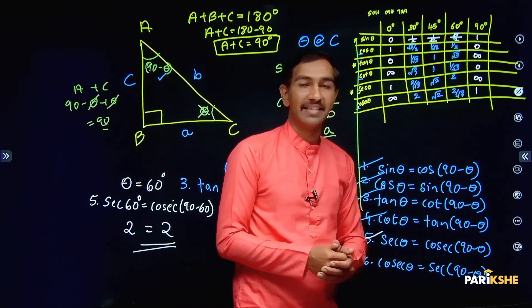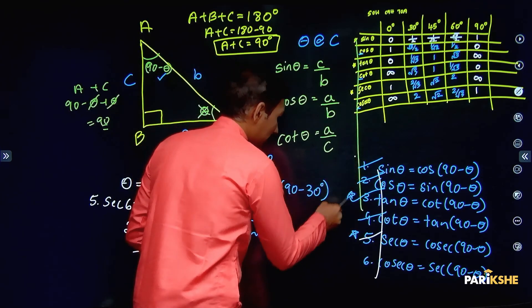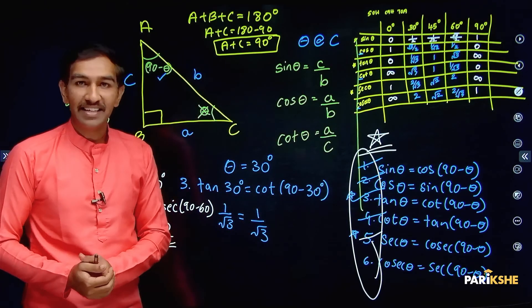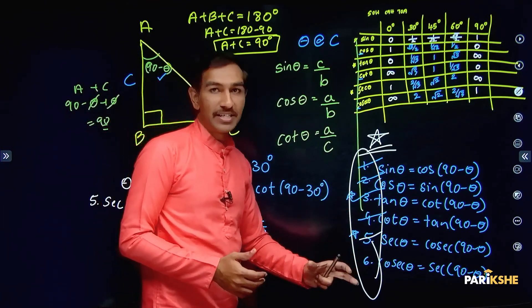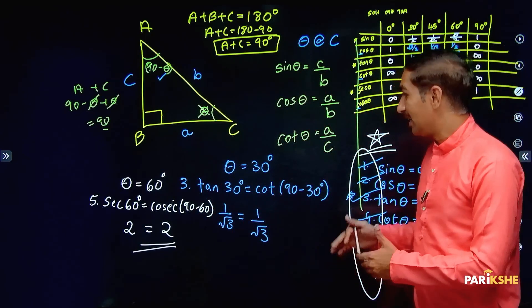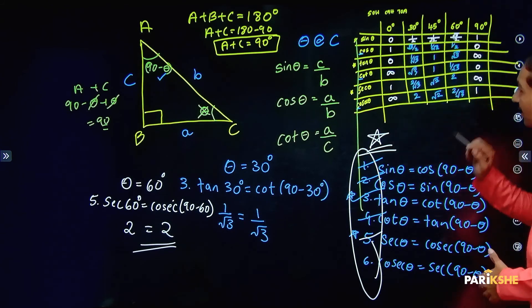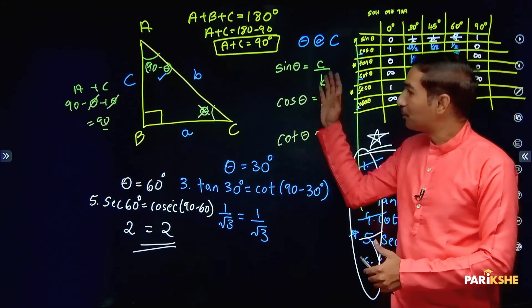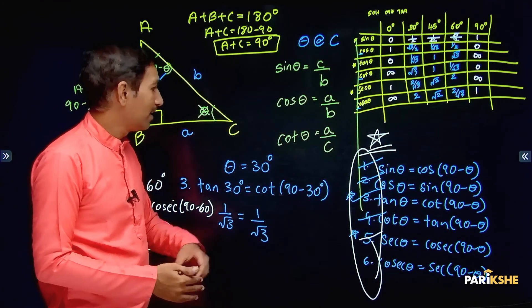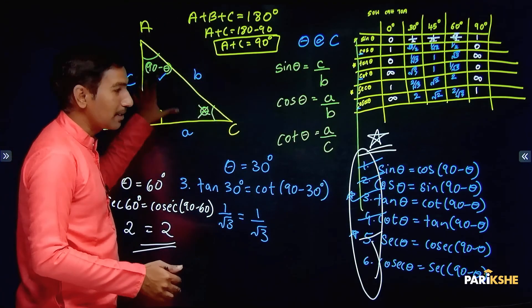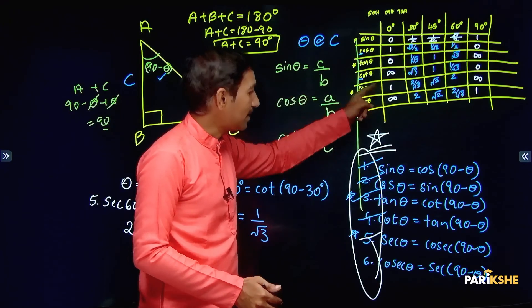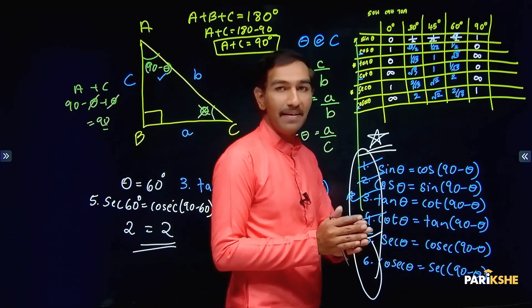So this is what complementary angles means, and these six points are very important. You must apply these in problems. These complementary angle formulas are very important for solving trigonometry problems. The proof was shown two ways: first using the triangle, and second using the table — both methods give equal results, which means the formulas are verified.